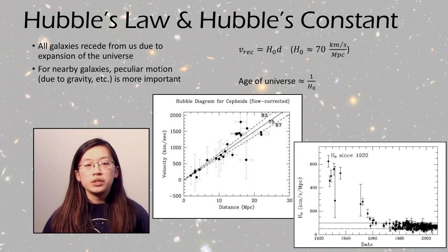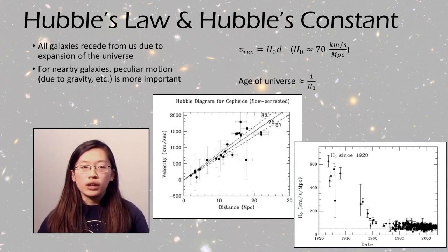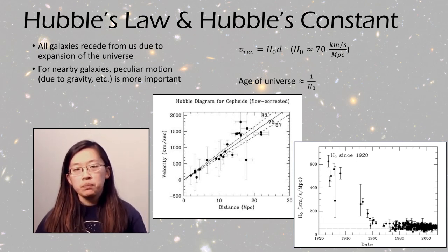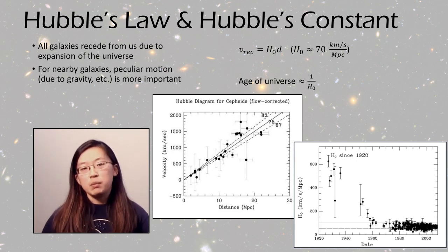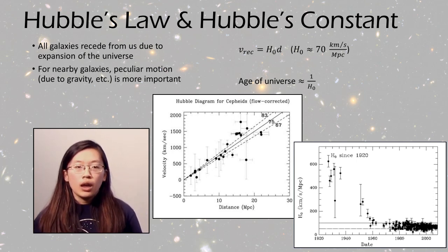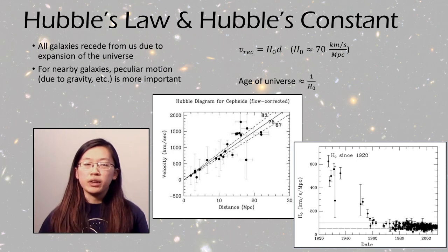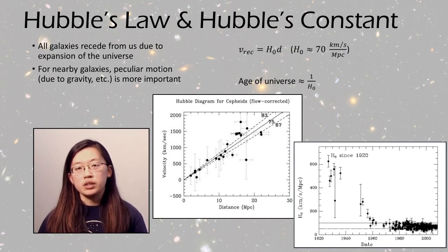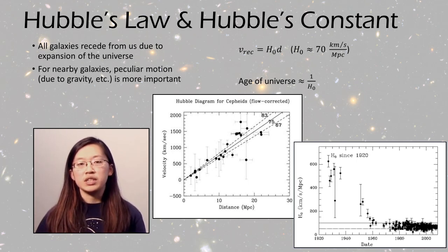So you might notice that this is actually a unit of one over time, since the kilometers in the megaparsecs can cancel out. And thus, the age of the universe is roughly given by one over the Hubble constant, since Hubble's constant describes the expansion rate.